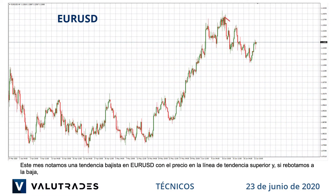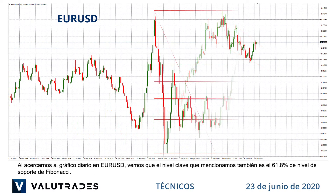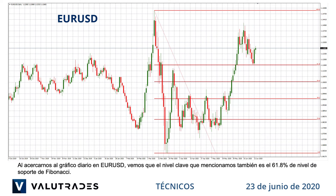This month we note a downtrend on EURUSD with price at the upper trendline, and if we bounce to the downside, the next key level is $1.117, and if price breaks that, keep an eye on the lower trendline. Zooming out to the daily chart on EURUSD, we can see that the key level we mentioned is also the 61.8% Fibonacci support level.